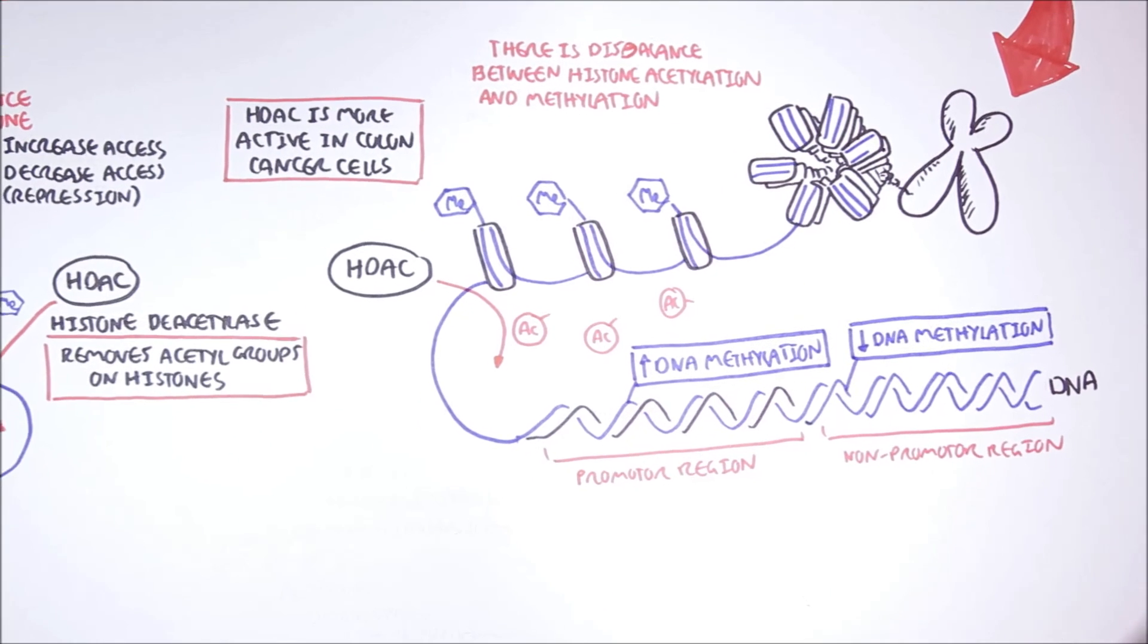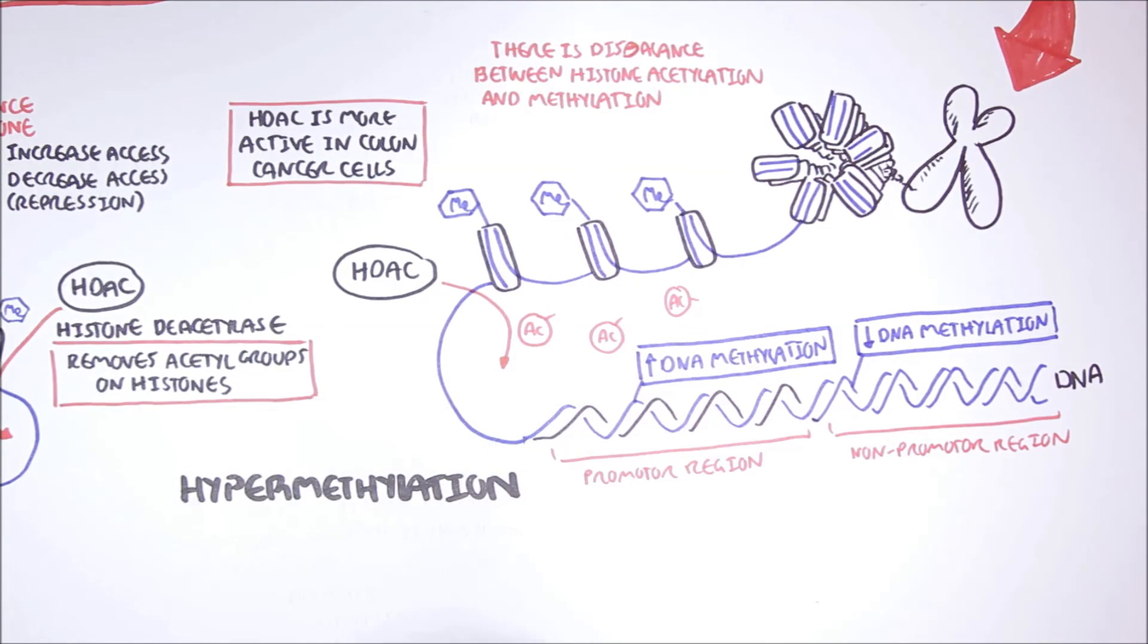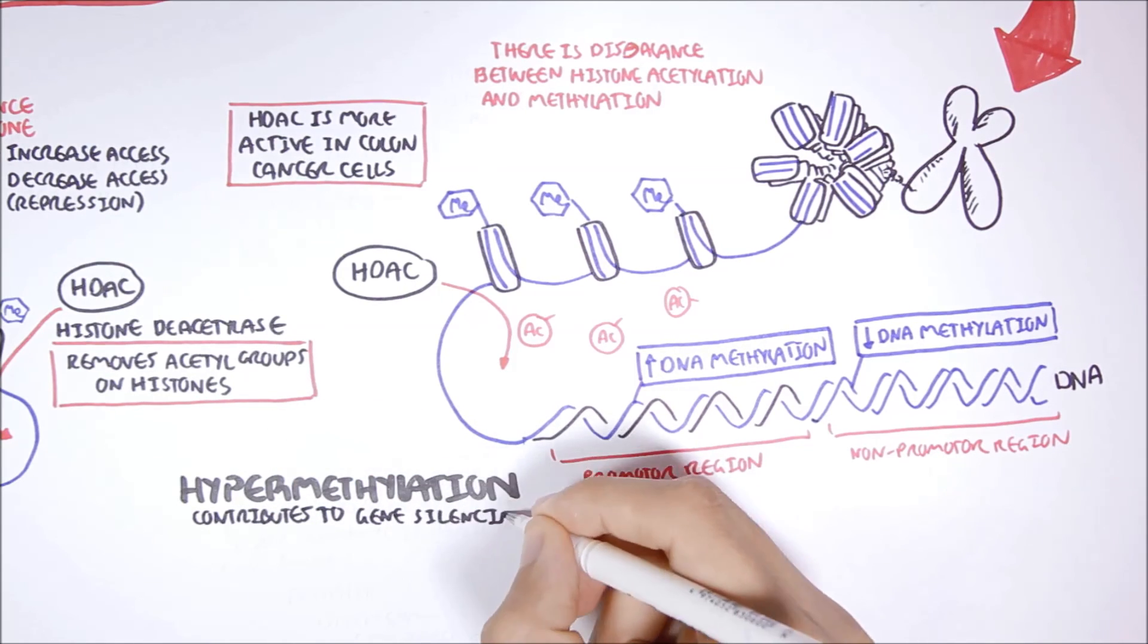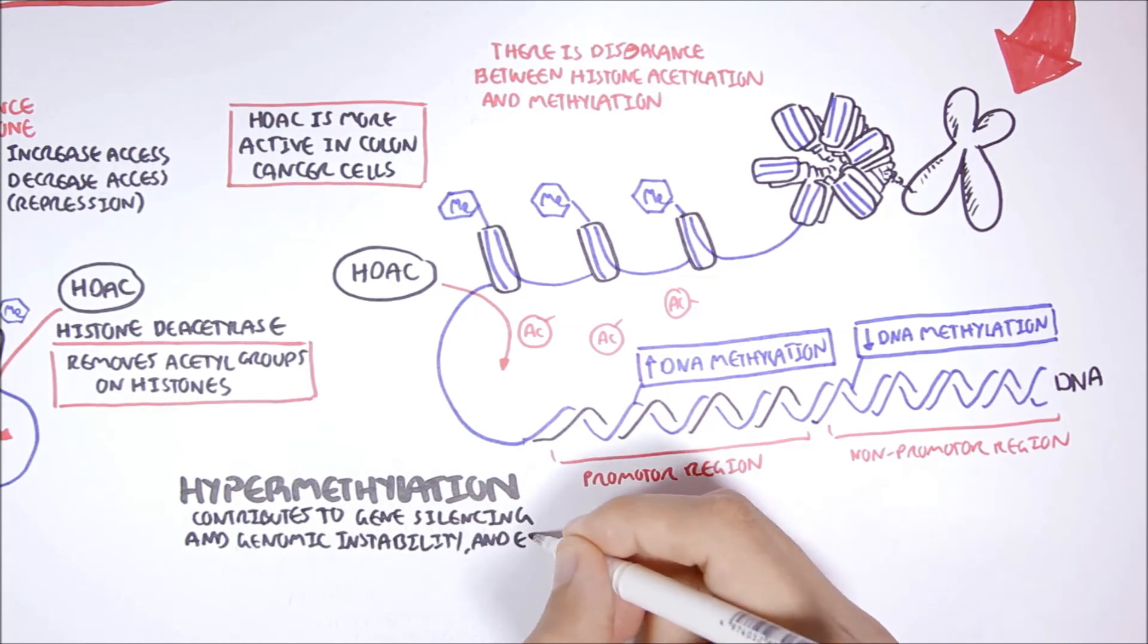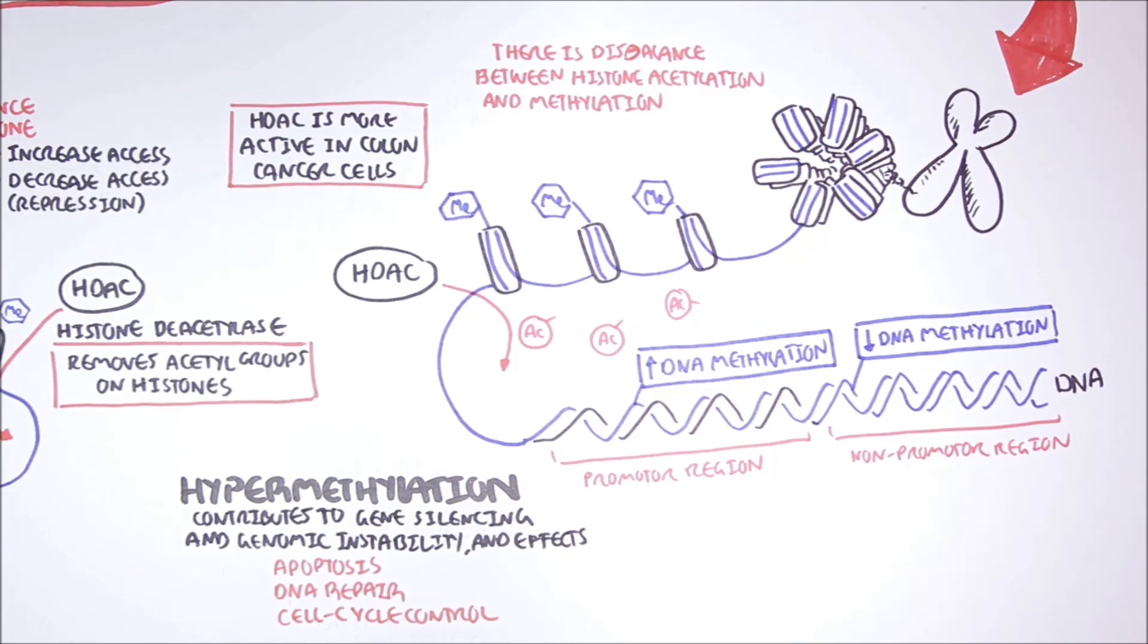So, again, there is hypermethylation on promoter regions, which contributes to gene silencing and genomic instability, and it will affect apoptosis, DNA repair, and cell cycle control. And there tends to be a decrease in methylation on non-promoter regions, which essentially don't do anything.